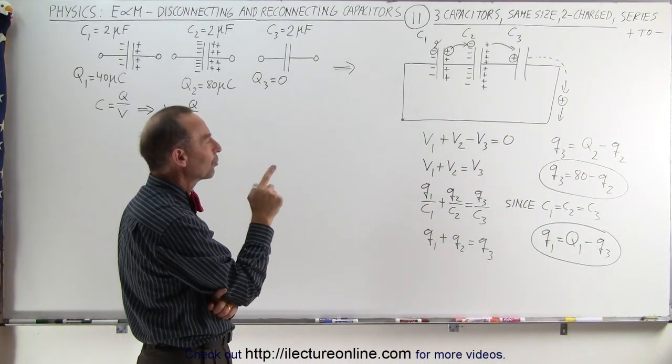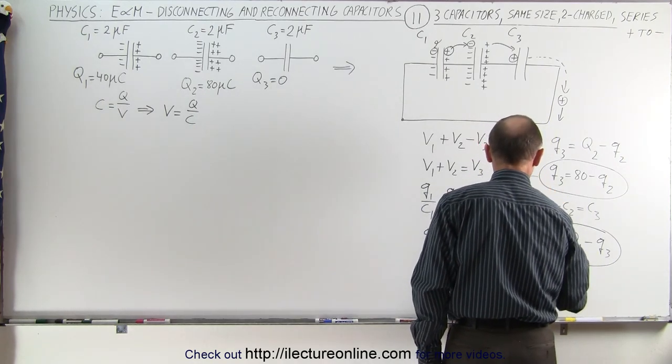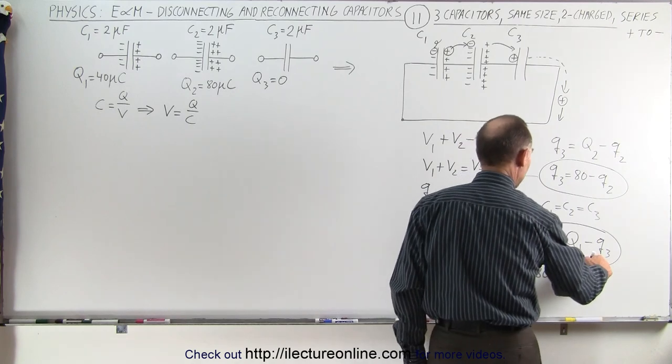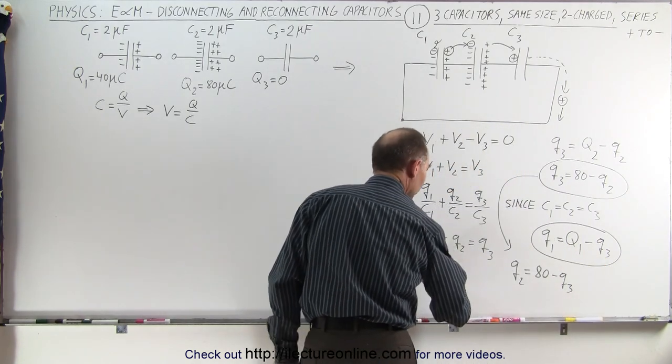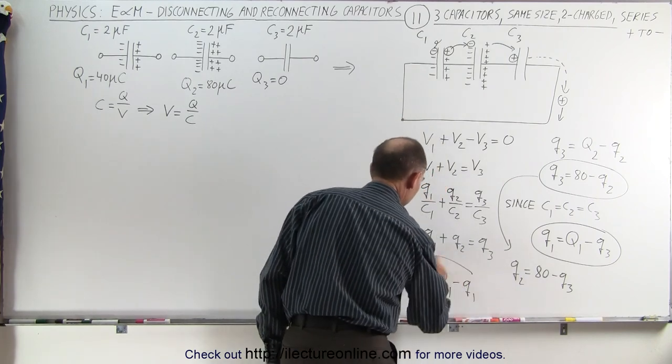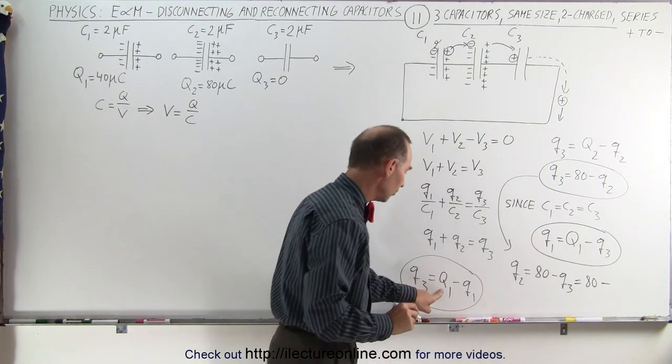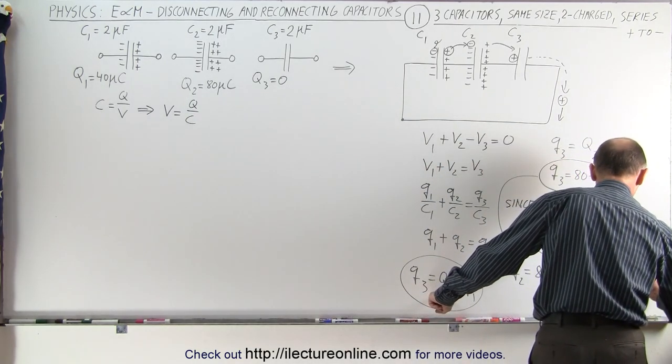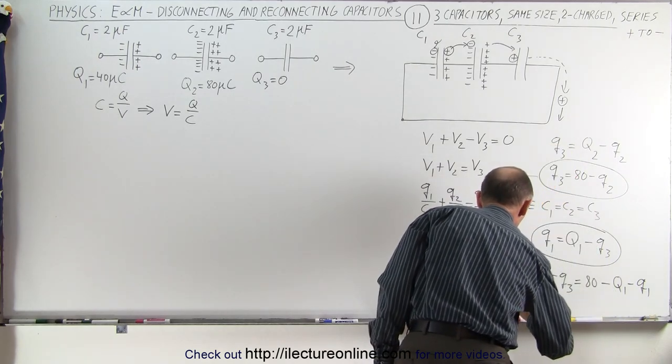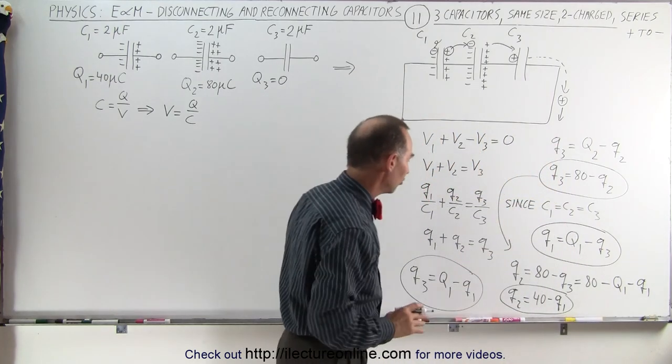We have Q2 in terms of Q3. I could solve this for Q2 in terms of Q3. So we have Q2 is equal to 80 minus Q3. And Q3 is related to Q1 through this equation. So Q3 is equal to big Q1 minus little q1. So I can replace that here. This is equal to 80 minus Q3, and Q3 is big Q1 minus little q1. Big Q1 is 40. So we have 80 minus 40 minus Q1, which means that Q2 is equal to 40 minus Q1.